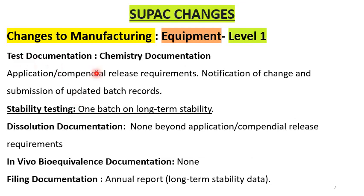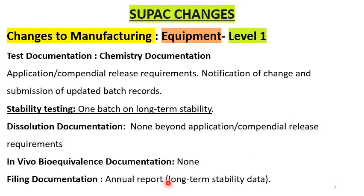For level 1 equipment changes, the chemistry documentation requires only application/compendial release requirements, notification of change, and submission of updated batch records. CBE (changes being effected) is required. Stability testing requires one batch on long-term stability. No specific dissolution documentation is required beyond application or compendial release requirements, and no bioequivalence is required. Filing documentation is done in the annual report for long-term stability.